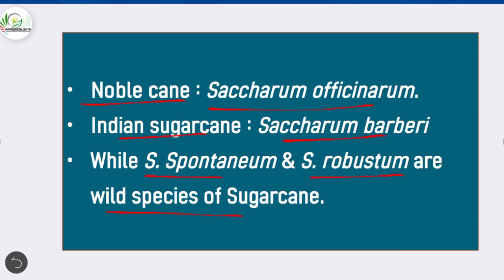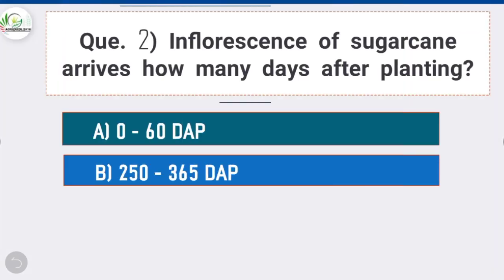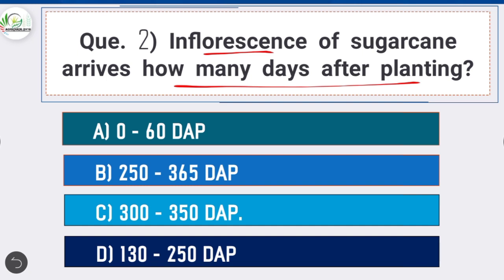Question 2: Inflorescence of sugarcane arrives how many days after planting? Option C is correct: 300 to 350 days after planting (DAP). Inflorescence of sugarcane is known as arrow or open panicle, which arrives around 300 to 350 days after planting.